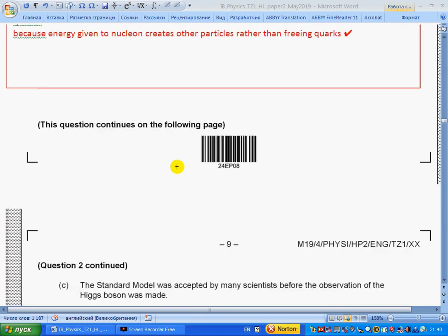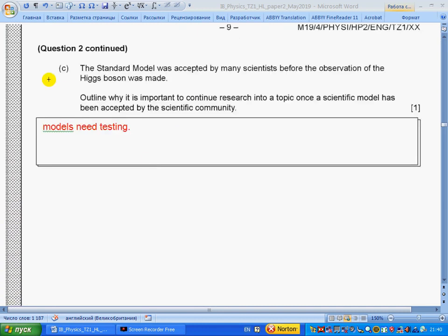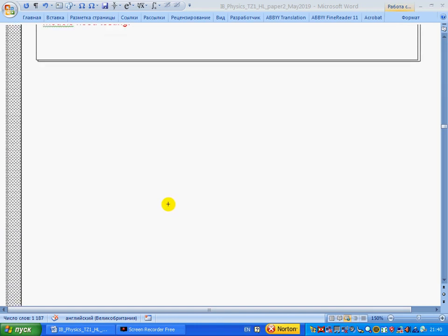Part c: A Standard Model was accepted by many scientists before observation of the Higgs boson was made. Outline why it is important to continue research into a topic once a significant model has been accepted by the scientific community. All models should be tested—models need testing.